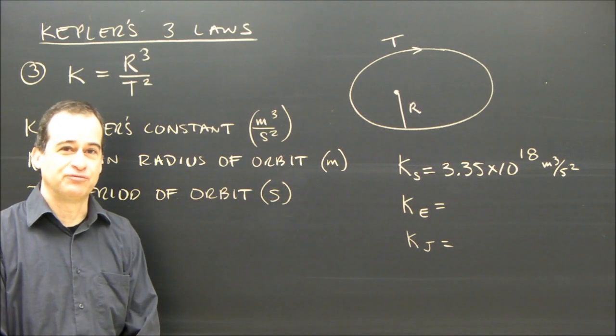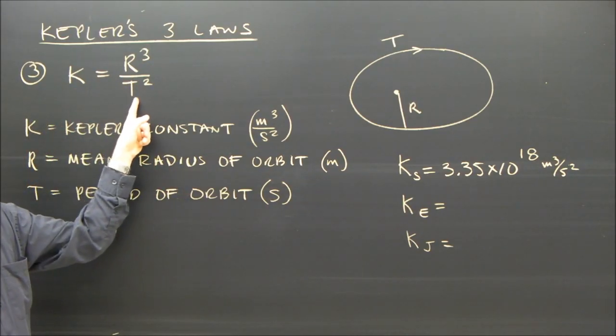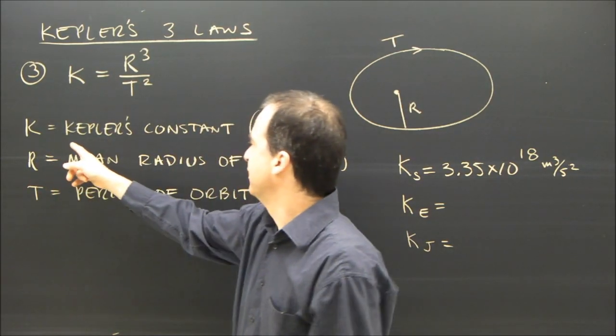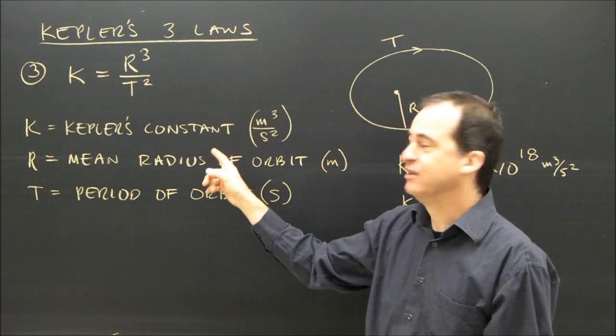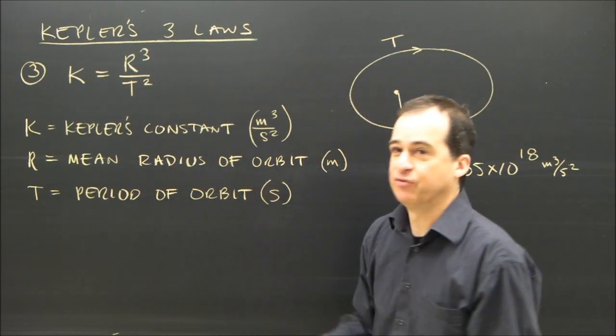Kepler's third law is a formula. The formula is k equals r cubed over t squared. What the variables are: k stands for Kepler's constant. It's in meters cubed per second squared. r is the mean radius of orbit.